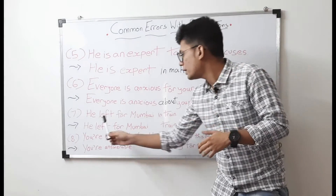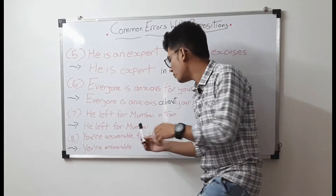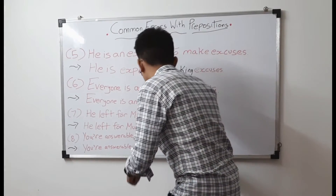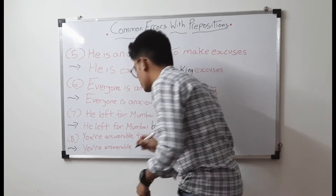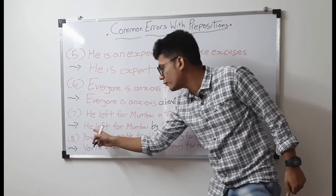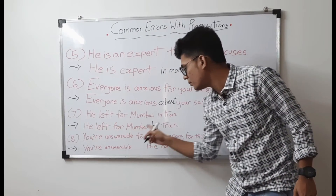Seventh sentence: 'He left for Mumbai in train.' That is wrong. The correct sentence is: 'He left for Mumbai by train.' — 'by' is the correct preposition to use with modes of transport.